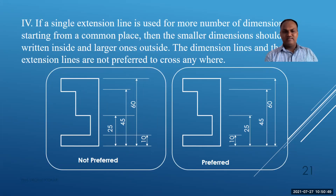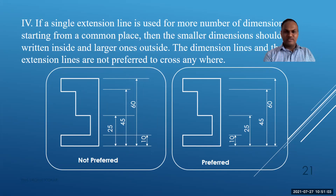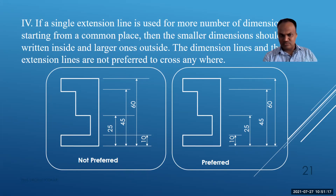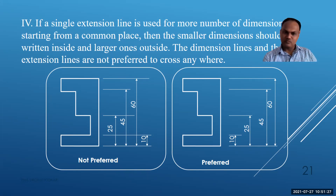Rule 4 — extension lines should not cross dimension lines; crossing of extension lines over dimension lines is not preferred. When a single extension line is used for multiple dimensions from a common origin, smaller dimensions should be written inside and larger dimensions outside, with the largest dimension on the outermost position. For example: 10, 25, 45, 60 arranged from inside to outside is preferred, as the alternative causes confusion.